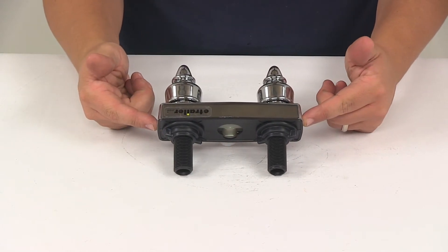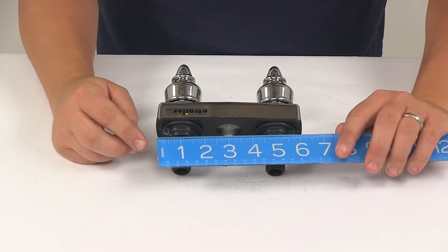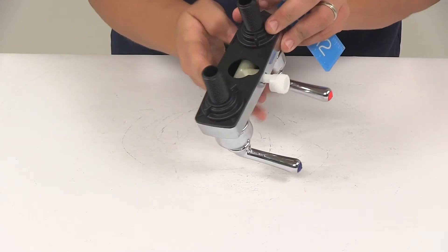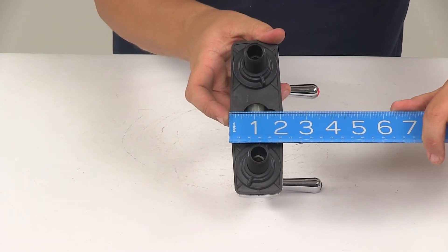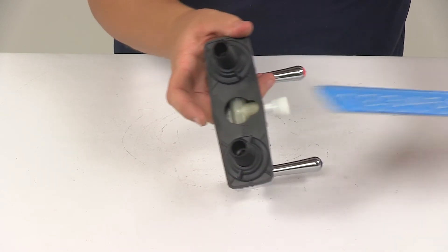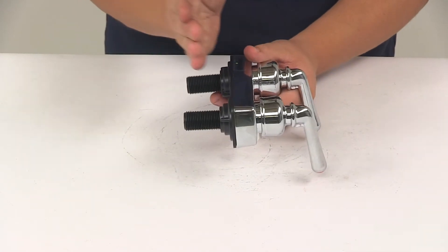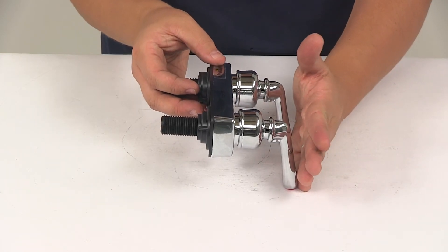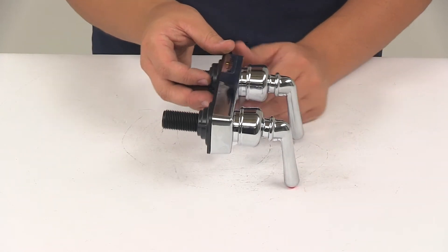Measuring edge to edge, the base gives us a length measurement of about six and one-quarter inches. Measuring the base in this direction is about two and one-eighth inches. From the back of the base to the outermost point of the handles, we get a depth measurement of about three and seven-eighths of an inch.